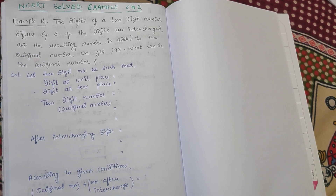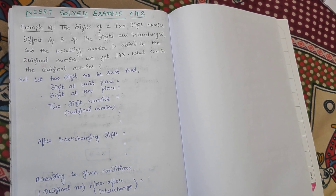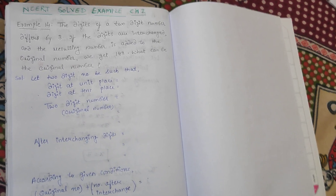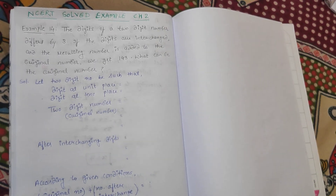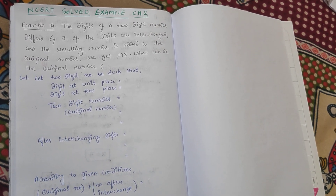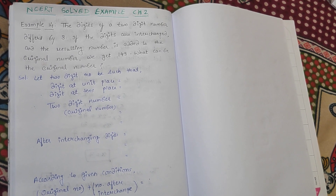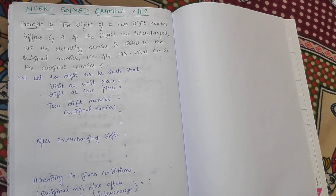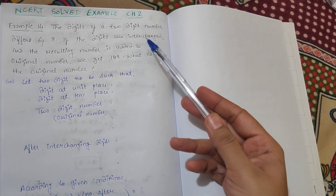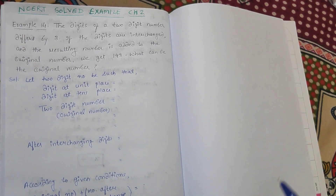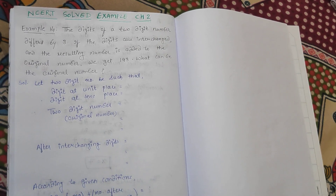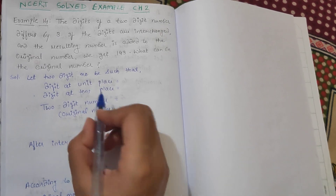In the previous video we saw the introduction and how to find the units place and tens place digits when such questions are given. Now we are solving example number 14. The digits of a two digit number differ by three. If the digits are interchanged and the resulting number is added to the original number, we get 143.